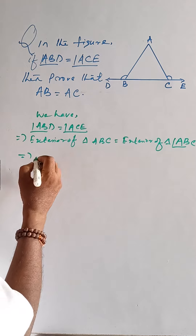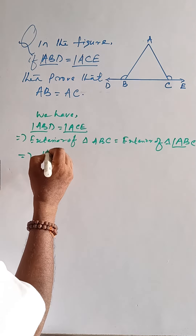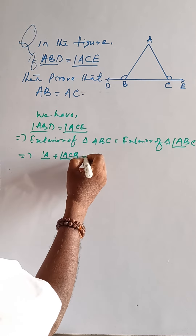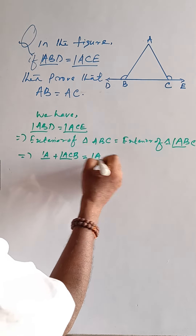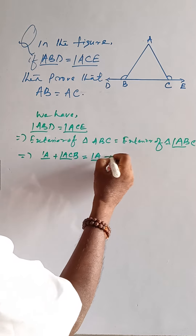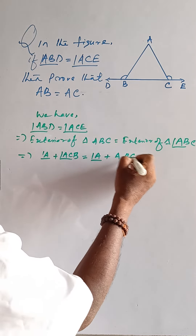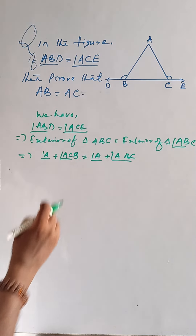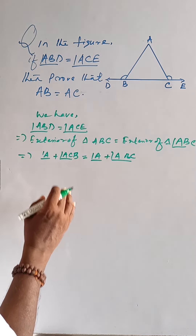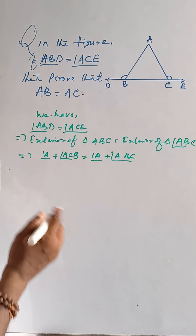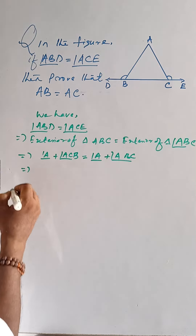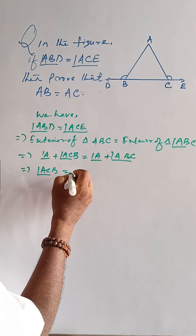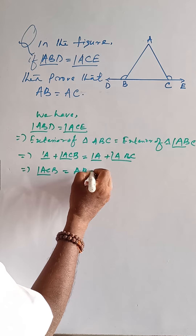That means angle A plus angle ACB is equal to angle A plus angle ABC, since the exterior angle of a triangle is equal to the sum of the interior opposite angles. Therefore, angle ACB is equal to angle ABC.